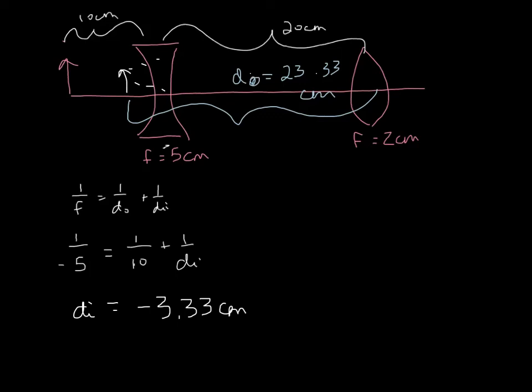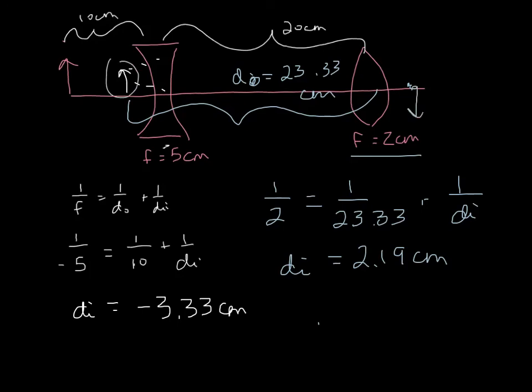So now we're going to apply that to the second lens. So 1 over 2, it's a convex lens, so it's still positive, is equal to 1 over, remember the DO is going to be this whole distance here. So it's 23.33 plus 1 over DI. Now when we solve for DI, we get 2.19 centimeters. So it's positive, that means it's over here. Our first object was upright, so this one is going to be inverted. So since we have a positive DI, that means it's real.